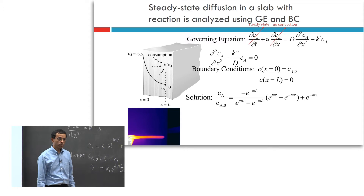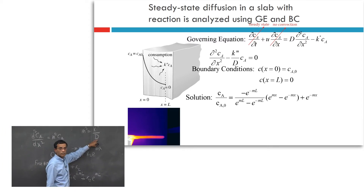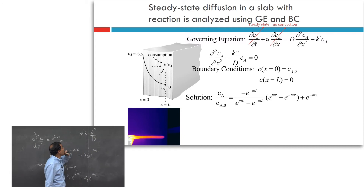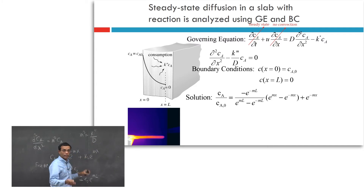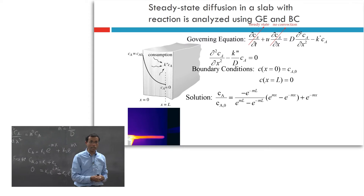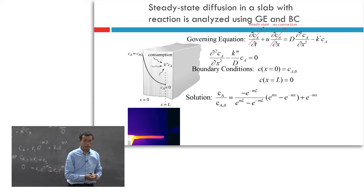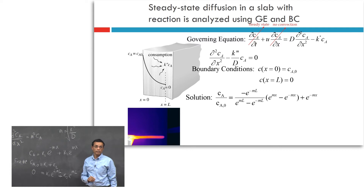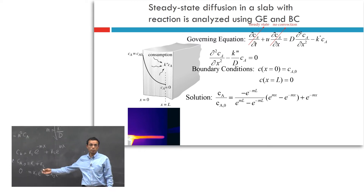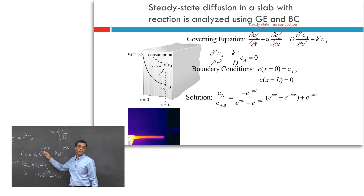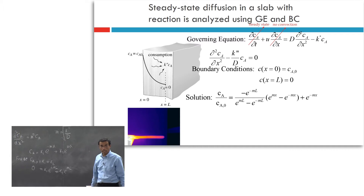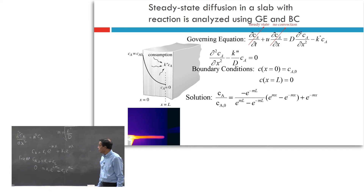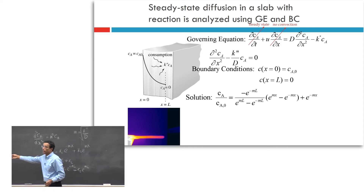Once you solve for K₁ and K₂, you get the full solution. M is square root of k''/D — it's less clumsy notation, and we can give physical significance to it. We'll discuss that in a few minutes.